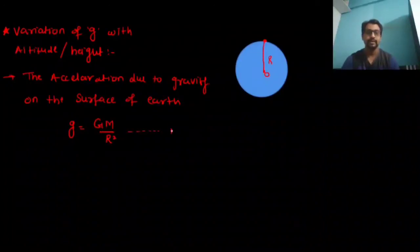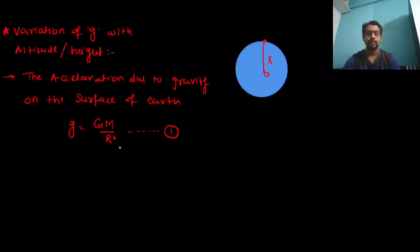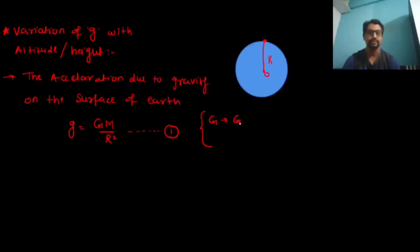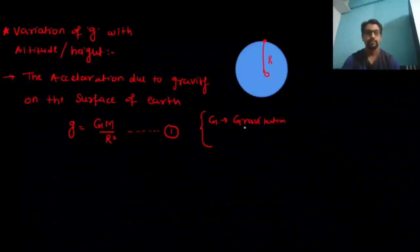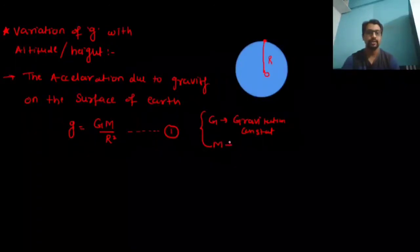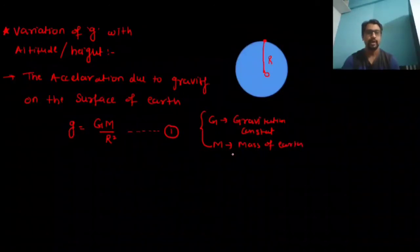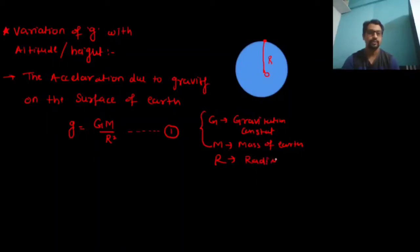Here, G is the gravitational constant, M is the mass of the Earth, and R is the radius of the Earth.